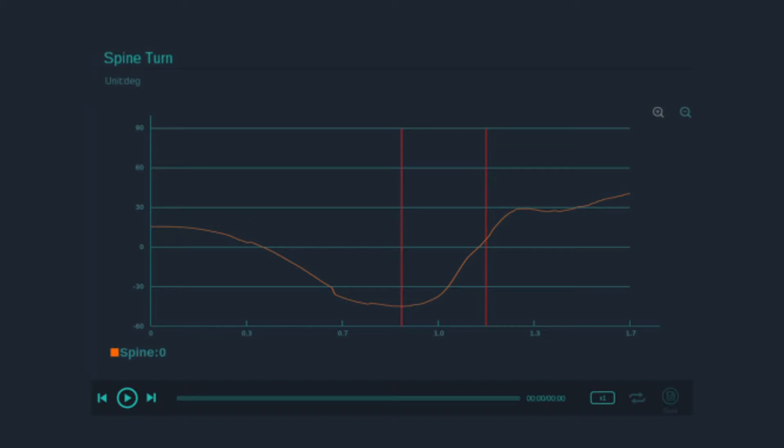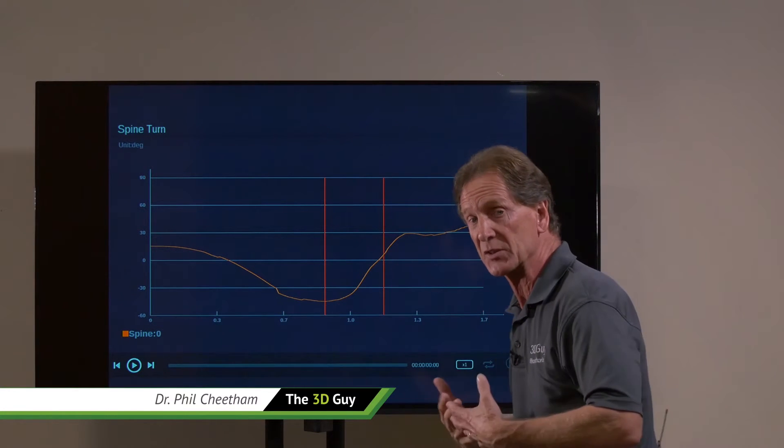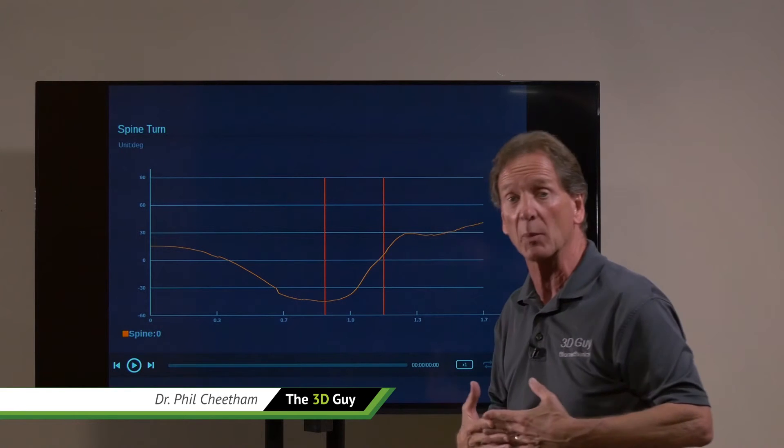So it gets the biggest as we see this red line here is top of backswing. So we expect it to get larger because that would be our coil at the very top of backswing.